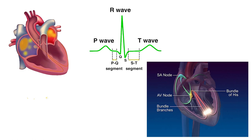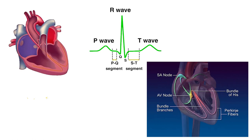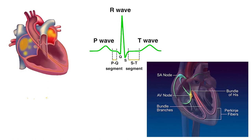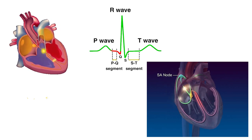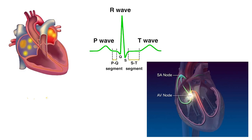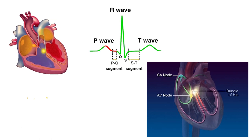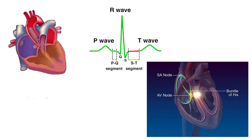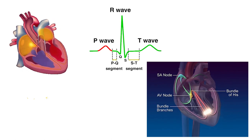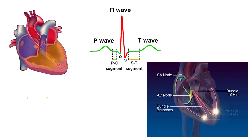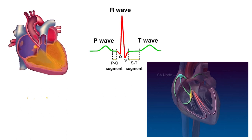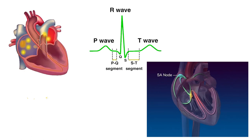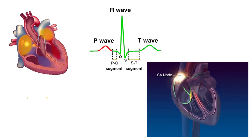At this time the atria are both repolarizing, which is relaxing, but that signal doesn't show up on the ECG trace because of the overbearing QRS signal. The T wave is the repolarization of the large ventricles as they relax, which then starts the process all over again for the next heartbeat.